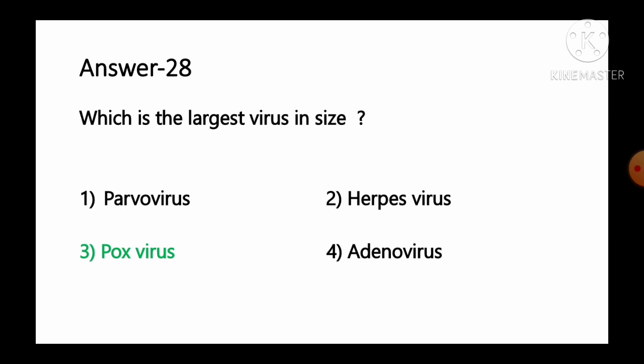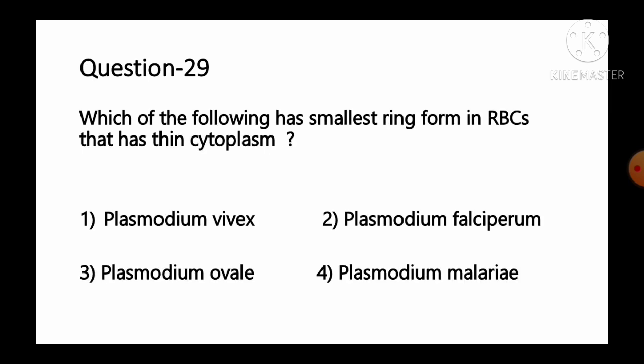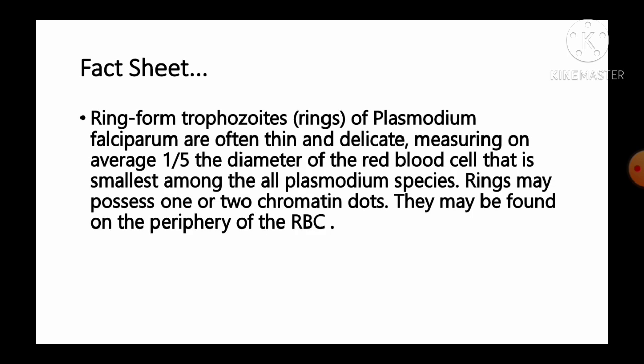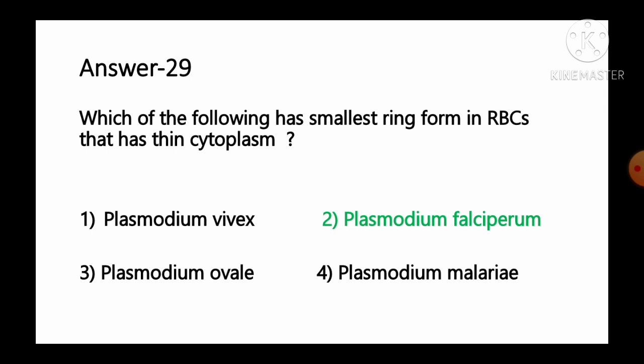Question number 29: Which of the following has the smallest ring form in the RBC with thin cytoplasm? Options: 1 Plasmodium vivax, 2 Plasmodium falciparum, 3 Plasmodium ovale, 4 Plasmodium malariae. Ring forms of trophozoites of P. falciparum are often thin and delicate, measuring on average one-fifth of the diameter of the red blood cell — the smallest among all Plasmodium species. Rings may possess one or two chromatin dots and may be found on the periphery of the RBC. So option number 2, P. falciparum, is the correct answer.